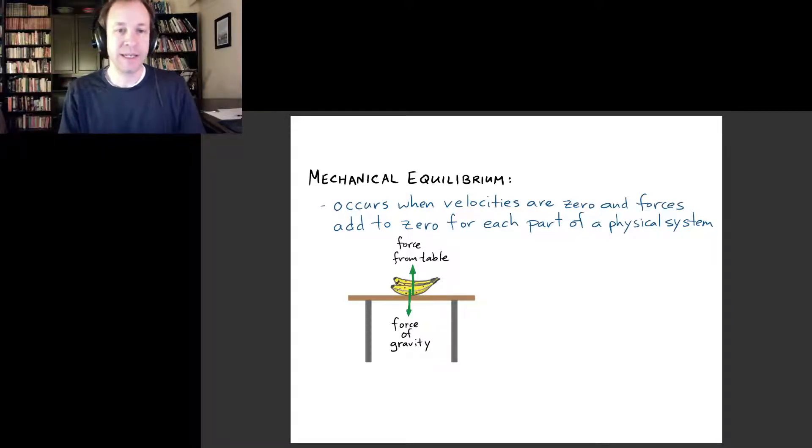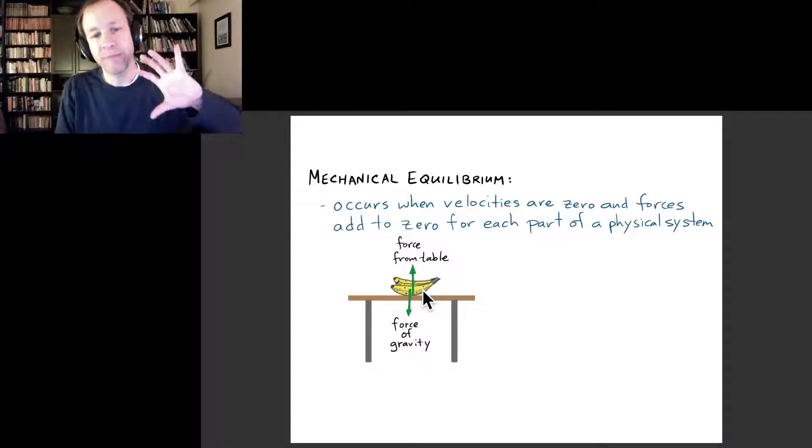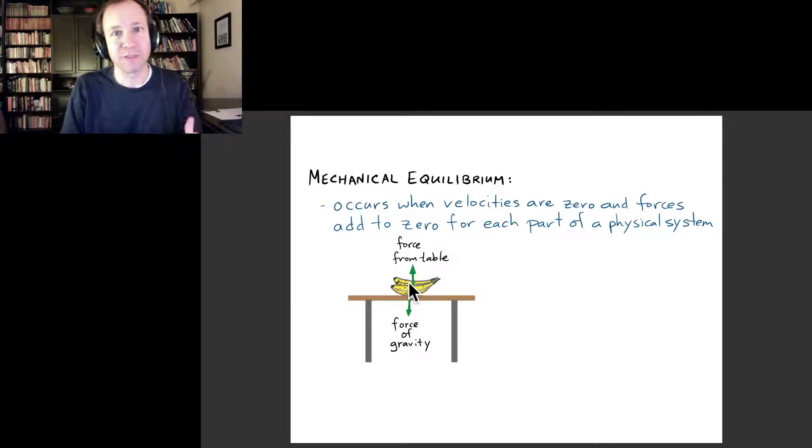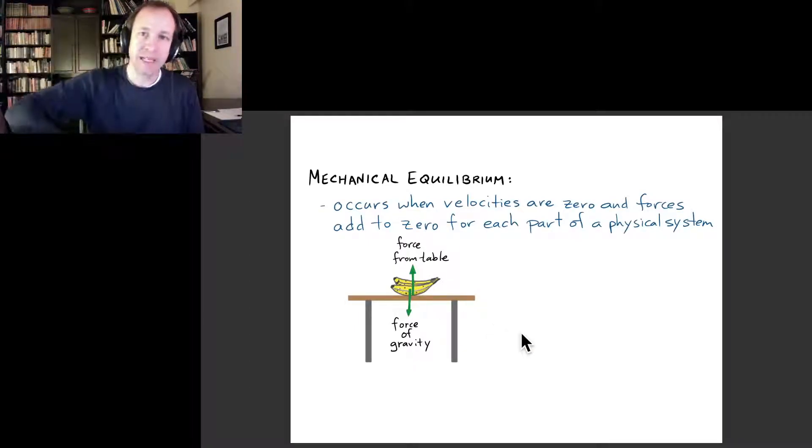If we think about the bananas on the table in this picture—which I drew because I felt like I could probably draw bananas, there's no special significance to them—the bananas have a variety of forces acting on them. There are some forces from the air that we'll ignore, but the main force is gravity, pulling the bananas downward.